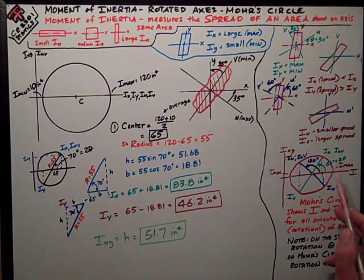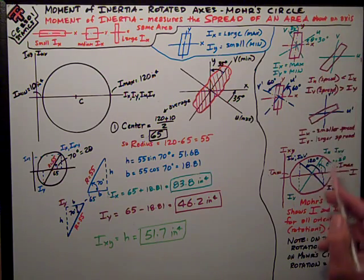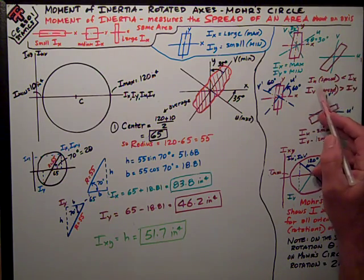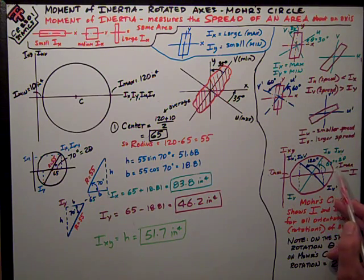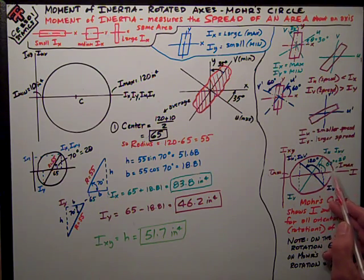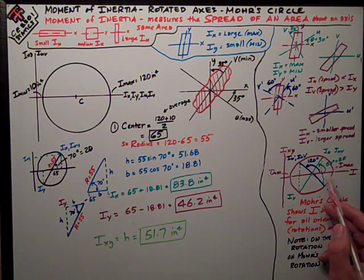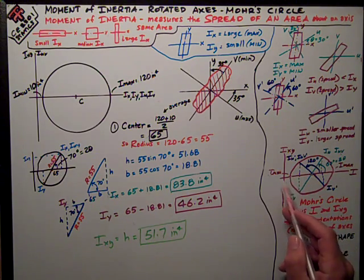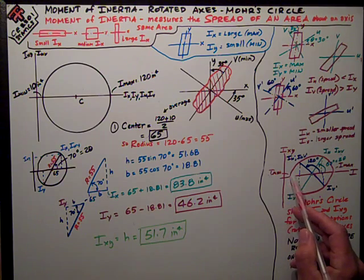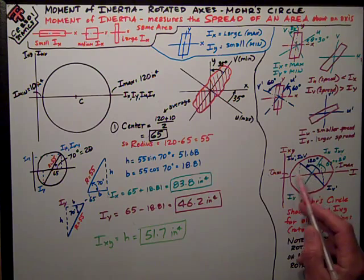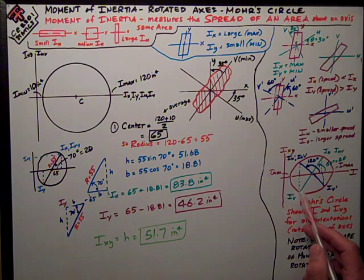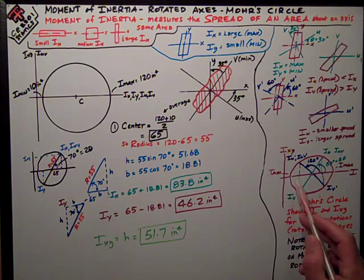So you see, in this first case, my iu was less than my ix. So my ix was this imax. And so, iu is a smaller number to the left on this horizontal axis. Similarly, imin was iy over here on the far left. And as I rotate my axes, my iv is greater than imin.